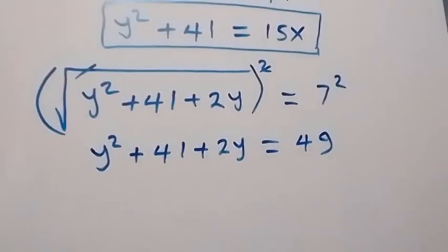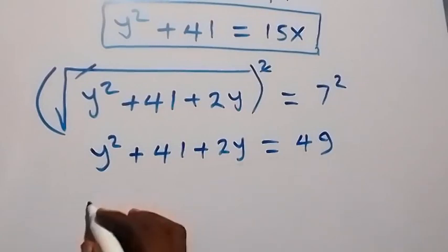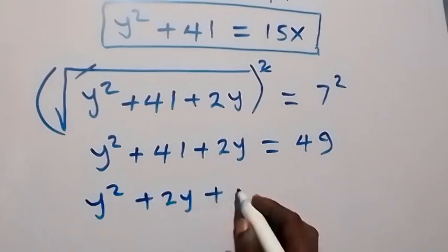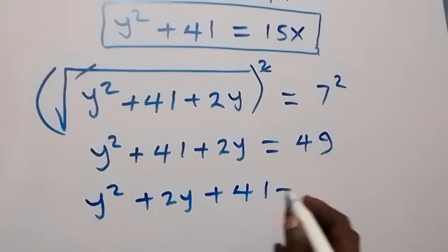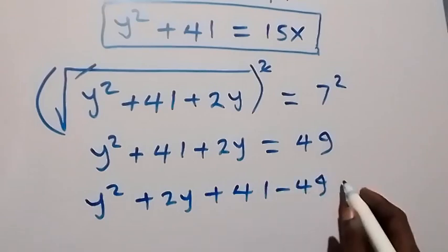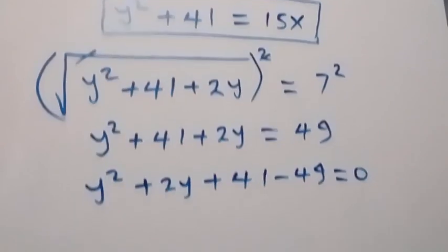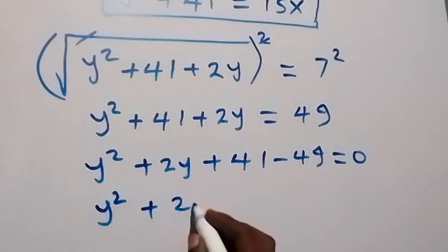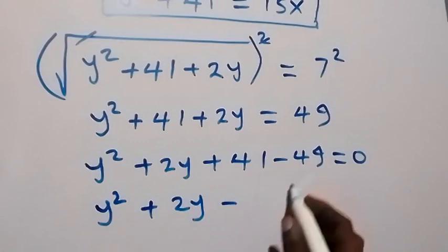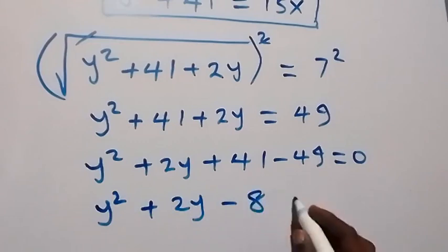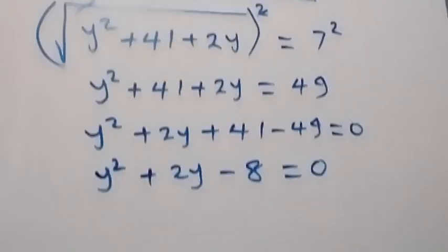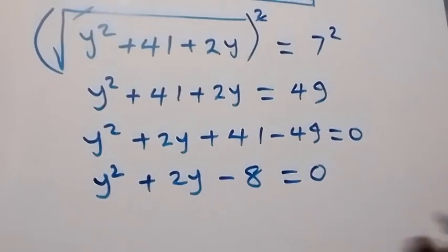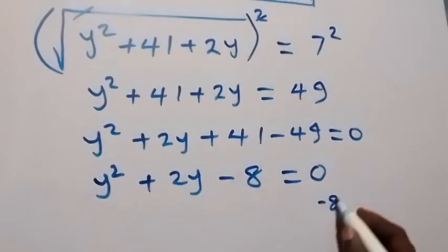Bringing 49 to the left side and rearranging, we get y squared plus 2y plus 41 minus 49 equals 0, which simplifies to y squared plus 2y minus 8 equals 0. We now solve this quadratic by factorization. The product is minus 8.